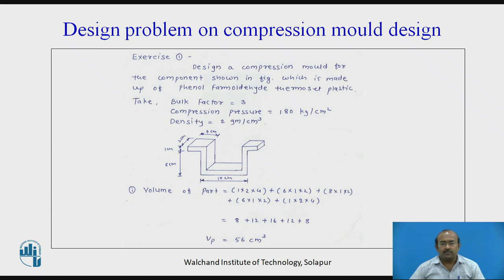Whatever concepts we just learned, we are going to use them for the design problem on compression mold design. The question is: design a compression mold for the component shown in the figure, which is made up of phenol formaldehyde thermoset plastic. Data given: bulk factor K = 3, compression pressure required = 180 kg per square centimeter, density = 2 grams per cubic centimeter. Initially we have to calculate the volume of this particular part. Segmented into distinct elemental geometries — 3 horizontal and 2 vertical — the total volume comes out to be 56 cubic centimeters.